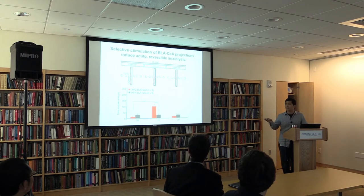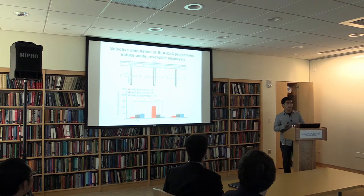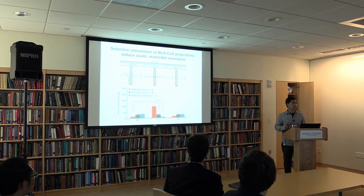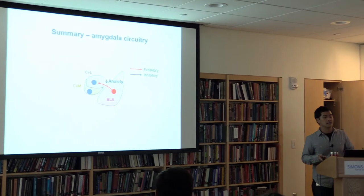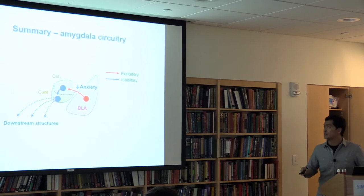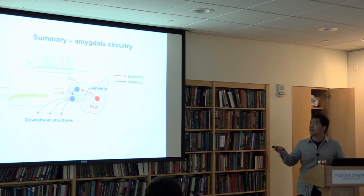The EYFP control mice did not show such an effect. We also stimulated the entire BLA cell bodies, which activated all BLA pyramidal neurons nonspecifically and elicited an anxiolytic effect, consistent with previous literature. Our precise optogenetic approach unexpectedly revealed a neural circuit element in the BLA that plays an anxiolytic role. A necessity experiment confirmed this projection is physiologically relevant. Slice patch-clamp experiments showed that stimulating BLA fibers in the CeL activated post-synaptic CeL neurons and inhibited CeM neurons.